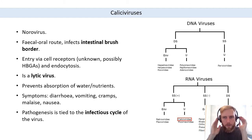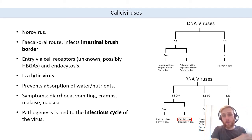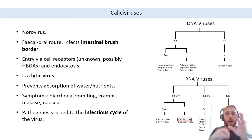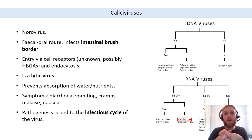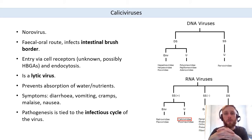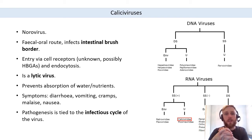Norovirus, a member of the Caliciviridae family, infects the intestinal brush border via specific receptors. It engages in a lytic replication cycle, causing lysis of these cells and disrupting the intestinal environment. This prevents absorption of liquid from the lumen, so liquid stays in the lumen and individuals suffer diarrhea and other symptoms associated with localized infection of the lower GI tract — all linked to lysis of the intestinal brush border cells.